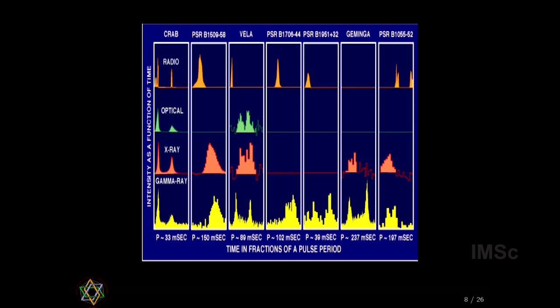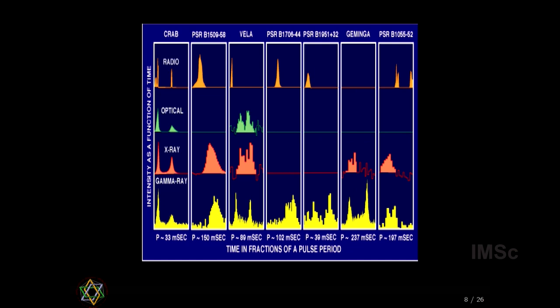Like other stars, pulsar emission spans the full electromagnetic spectrum — from radio to optical to X-ray to gamma-ray. But for the same reason that radio telescopes can be built very large on the ground, we can observe pulsars in radio wavelengths very precisely. From this point in my talk, by 'pulsar' I will mean only pulsars studied in the radio wavelength.